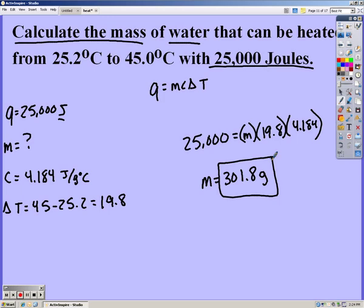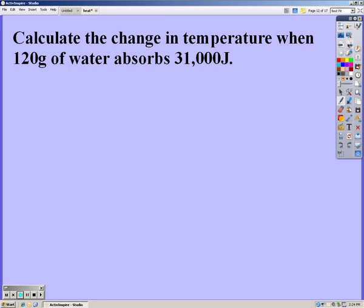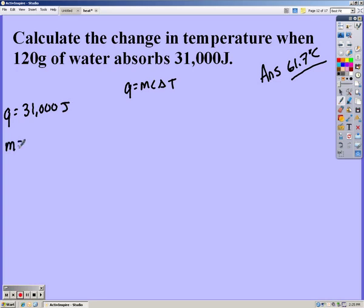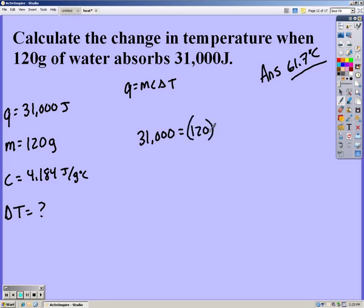Don't restart it when you think you have it. So the answer you should have got was 61.7 degrees Celsius. If you got that, then you can fast forward and try the next one on your own. If you didn't, keep playing and see where you messed up. So your Q should have been 31,000 joules. Mass is 120 grams. Our CP, again, 4.184 joules gram degree Celsius. And delta T is what we're looking for. So we plug it in. Solving for delta T is how we get 61.7.